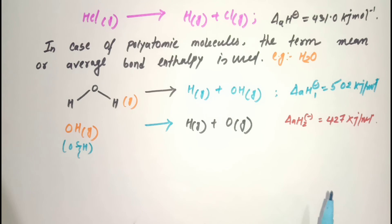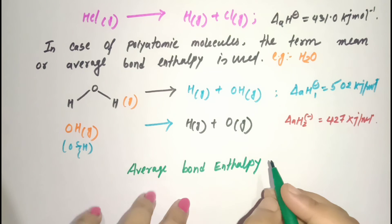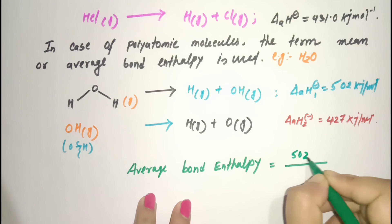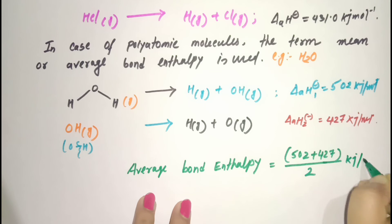After taking the mean or average value, we get the bond enthalpy of water molecule is 464.5 kJ per mole. This is how we calculate polyatomic molecule bond enthalpy.